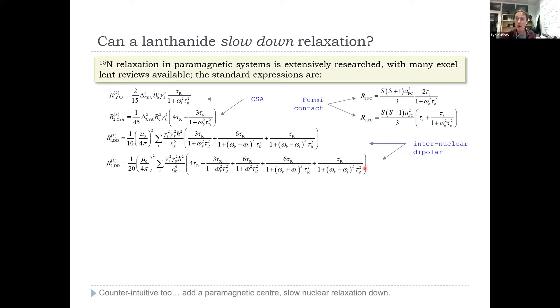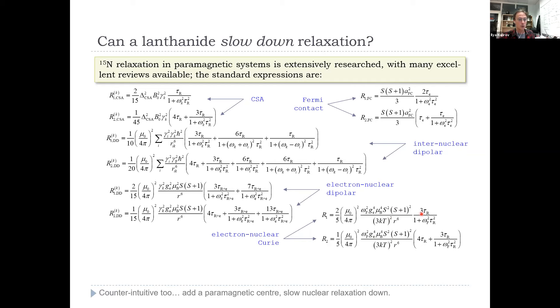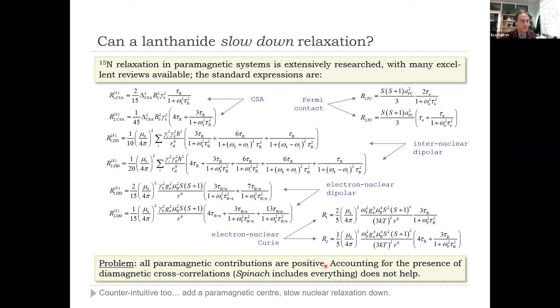All the internuclear dipolar couplings, pluses throughout or a square. All the electron nuclear dipole-dipole interactions, all the hyperfine induced relaxation and so on, all of them have got plus signs. So it's an enhancement, never a reduction. Electron nuclear Curie relaxation, the other component, also everything has a plus. So all paramagnetic contributions are positive. If we account for all diamagnetic cross correlations, no, it doesn't reproduce. It's bloody counter-intuitive too, right? You add a paramagnetic center, relaxation slows down. It's not supposed to happen.